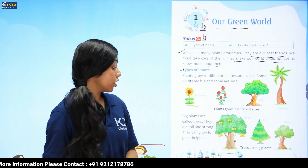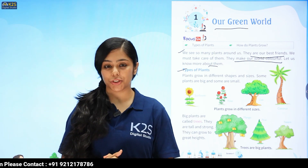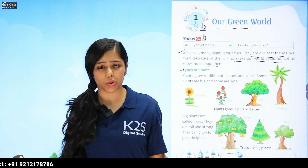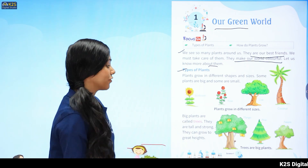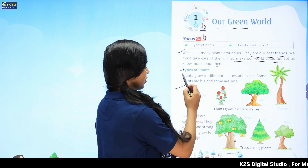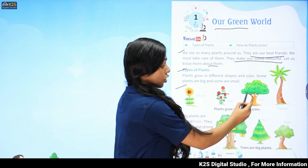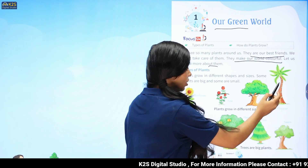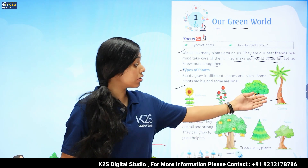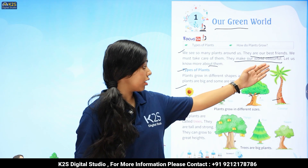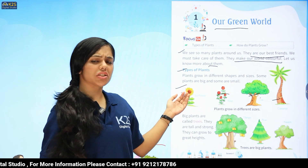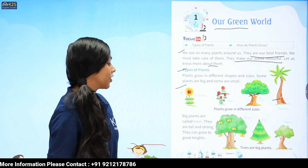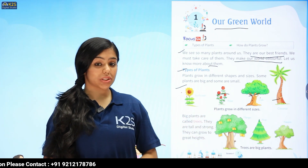So, there are types of plants. Like, we see, kuch plants small hoti hai, kuch plants bohot big hoti hai. So, kuch examples ko hum dekhte hai. For example, sunflower, rose, oak tree, and coconut tree. See, coconut tree kitna big hai. And see, sunflower. Sunflower is very small, no? So, next, let's move to the next part.